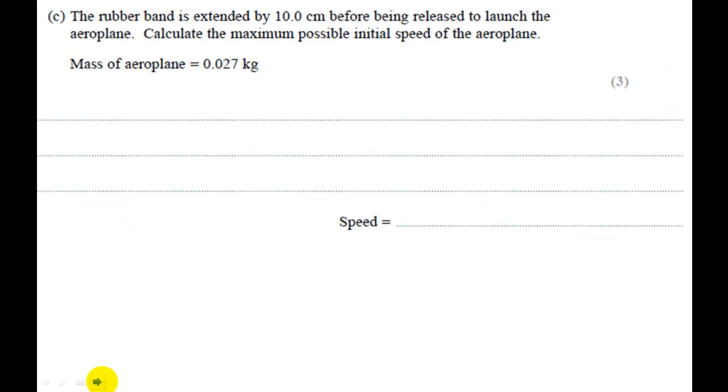Pause the video and read this question. Here it says that the rubber band is extended by 10 centimeters before being released. Calculate the maximum possible initial speed of the airplane. So what we're saying is that the strain energy available to the paper airplane is 0.75 joules. So 0.75 joules is going to be converted into kinetic energy. It will soon equal the half mv squared of the object. So I just need to rearrange this equation to tell me what v will be, as I have m.